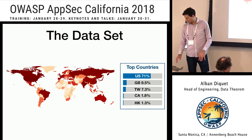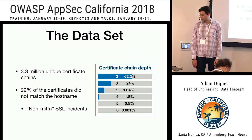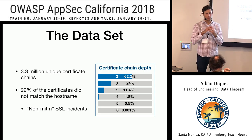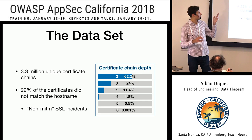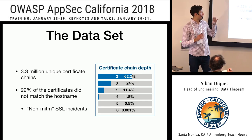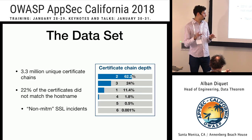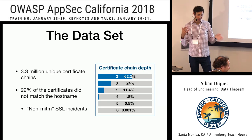At a high level: we've seen more than 3 million unique certificate chains. Among all the reports, 22% had a bad certificate chain that did not match the server hostname — so it wasn't actually an attempt at decrypting or intercepting traffic, it was just a misconfiguration or a captive portal. We call these non-man-in-the-middle incidents. So 22% of reports fall into that category.